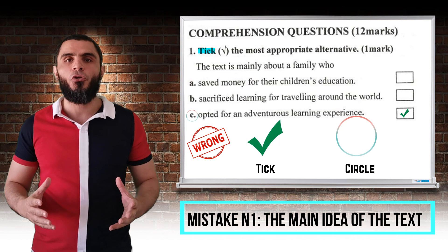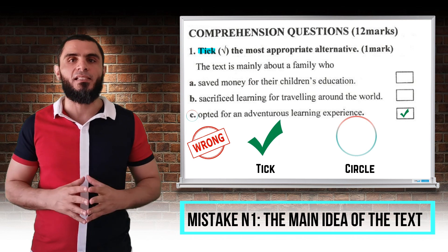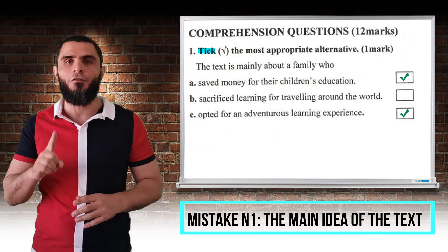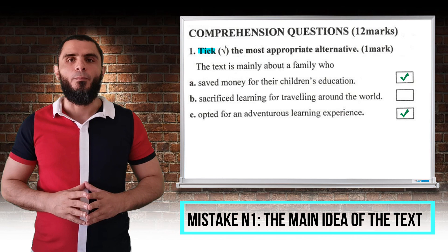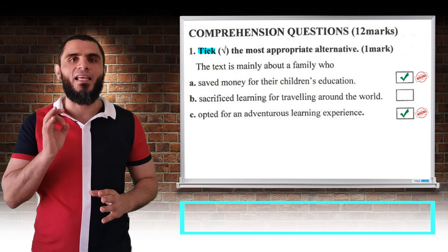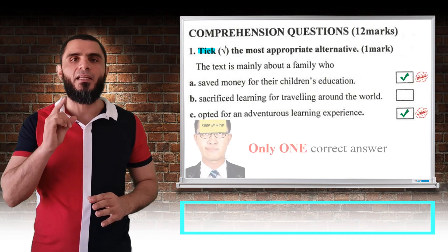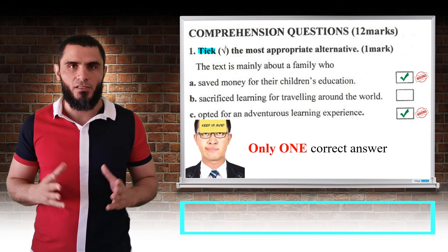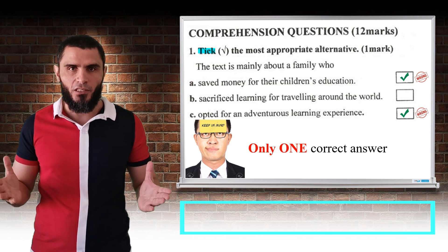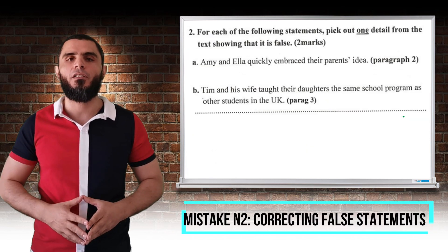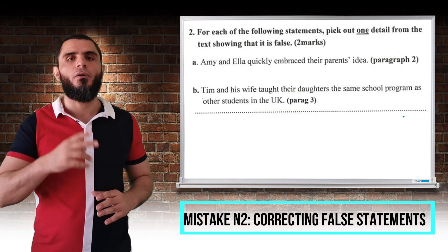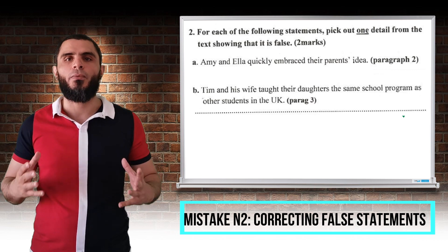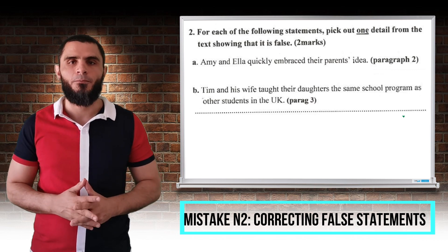Another problem students make is that they tick two answers instead of one. Be careful — there is only one correct answer with such questions. Let's move on to mistake number two: correcting false statements.